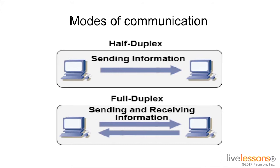There are two modes of communication. The first one is half duplex, where one person sends at a time or one person receives at a time, versus full duplex, where we can be sending and receiving information at the same time.